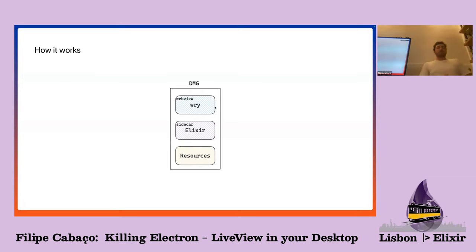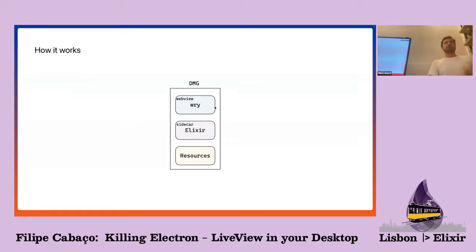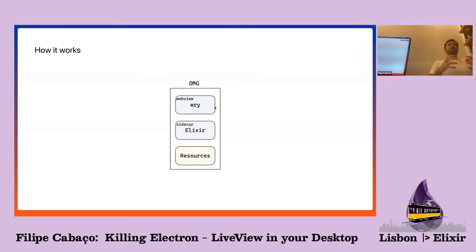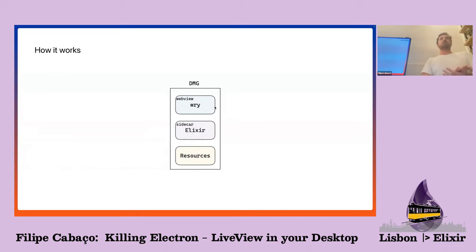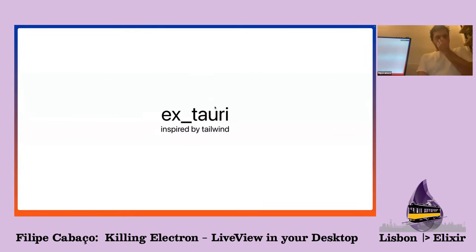Elixir is running as a sidecar, and to make it work it's wrapped in Burrito. So in this talk we have Rust, Elixir, and Zig — because Burrito is a way to package Elixir applications as a single binary. It's actually a real single binary: it squashes the Erlang runtime system into that single binary along with your code and whatever it needs to run on the target system. It's a really good library. Inside the DMG there's a resources folder if you need support files.